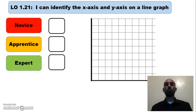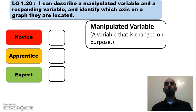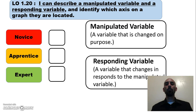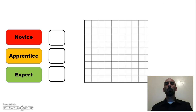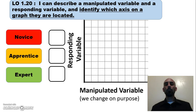Now assess yourself — you may need to refresh your memory since this was brief, but test yourself. Can you label the x-axis and the y-axis on a graph? Can you describe a manipulated variable and a responding variable? The manipulated variable is the one we change on purpose; the responding variable changes in response to it. The manipulated variable goes on the x-axis, and the responding variable goes on the y-axis.